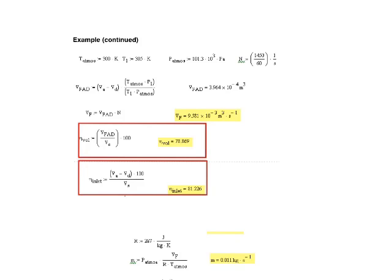We are going to find the free air delivery. The atmospheric condition is given as 300 K, and the inlet conditions are 32°C or 305 K.